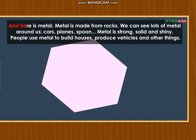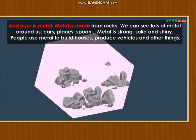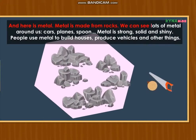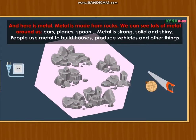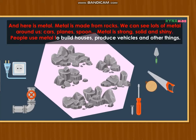And here is metal. Metal is made from rocks. We can see lots of metal around us — cars, planes, spoons. Metal is strong, solid and shiny. People use metal to build houses, produce vehicles and other things.